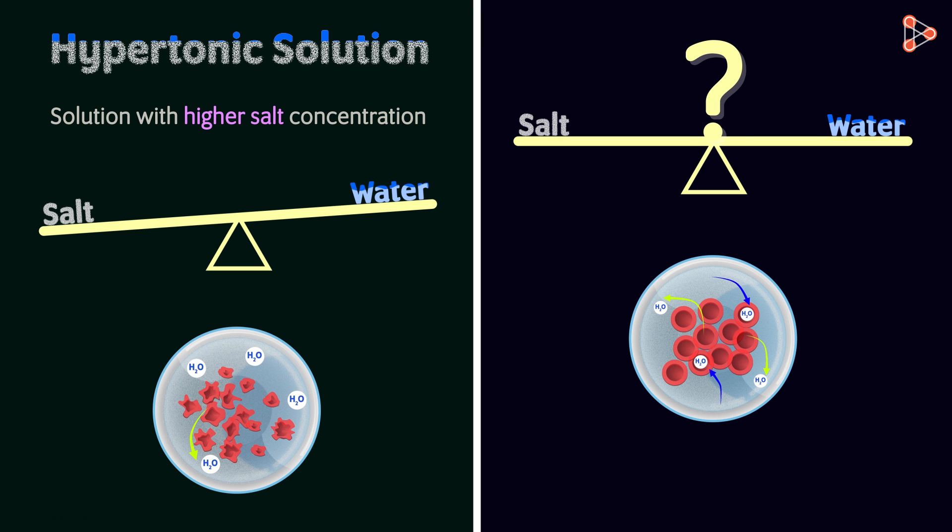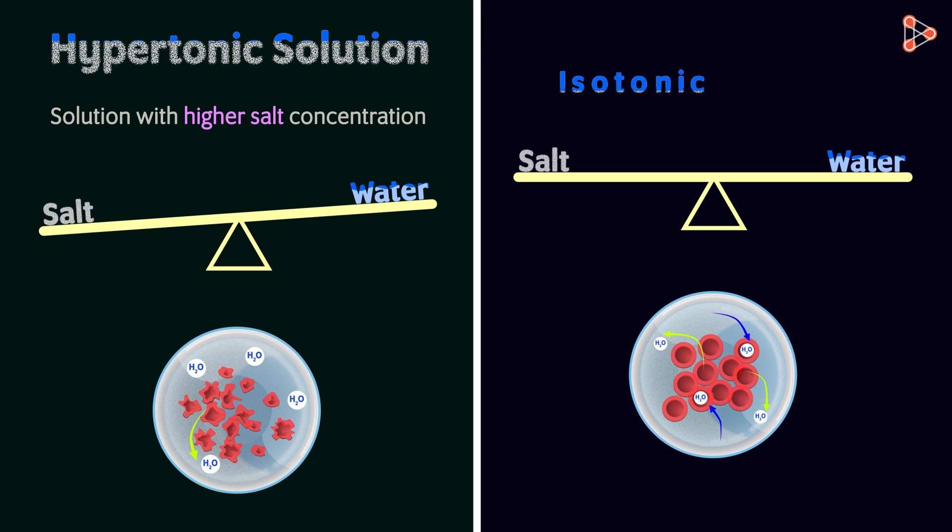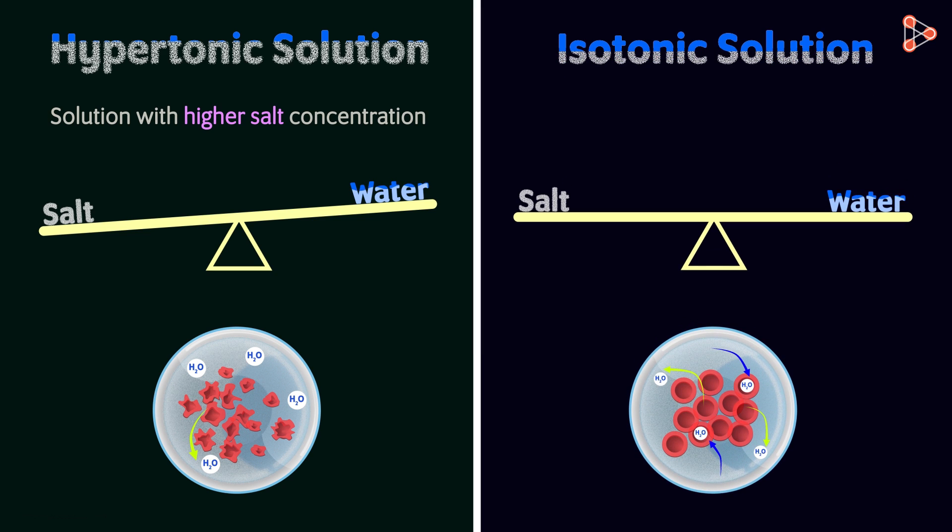Do you know what such a solution is called? It is called as isotonic solution. The two solutions are isotonic when the concentration of water is the same on either sides of the semi-permeable membrane.